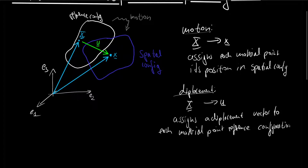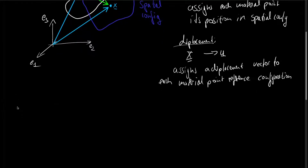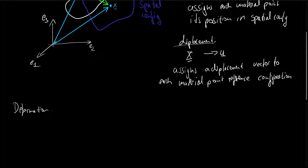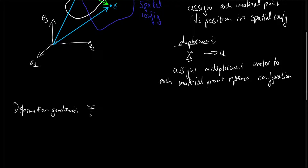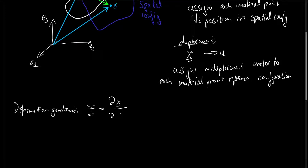Based on these two descriptions of the motion — the motion itself and the displacement — we derived two quantities. The first was the deformation gradient, defined as a capital F, a rank-2 tensor or matrix, and it is defined as the derivative of the spatial position with respect to the reference position.